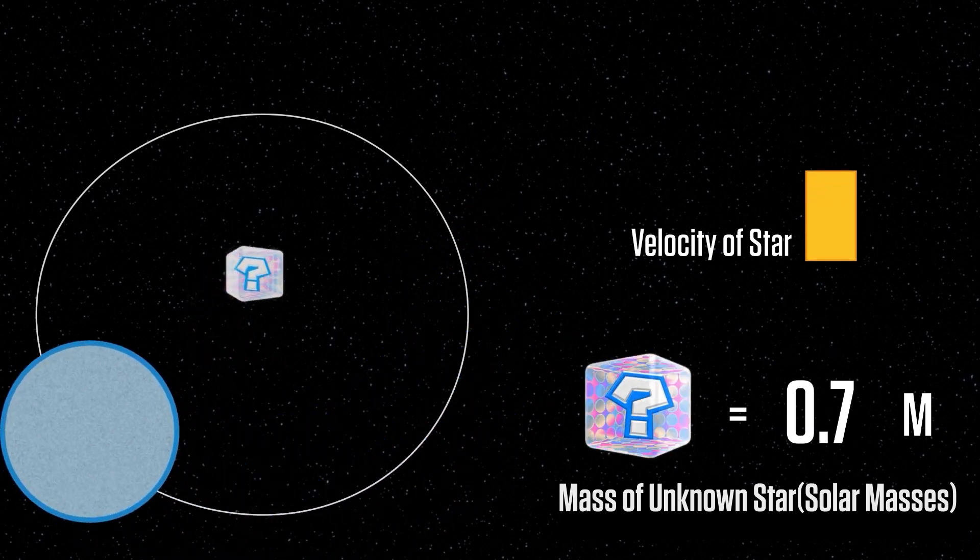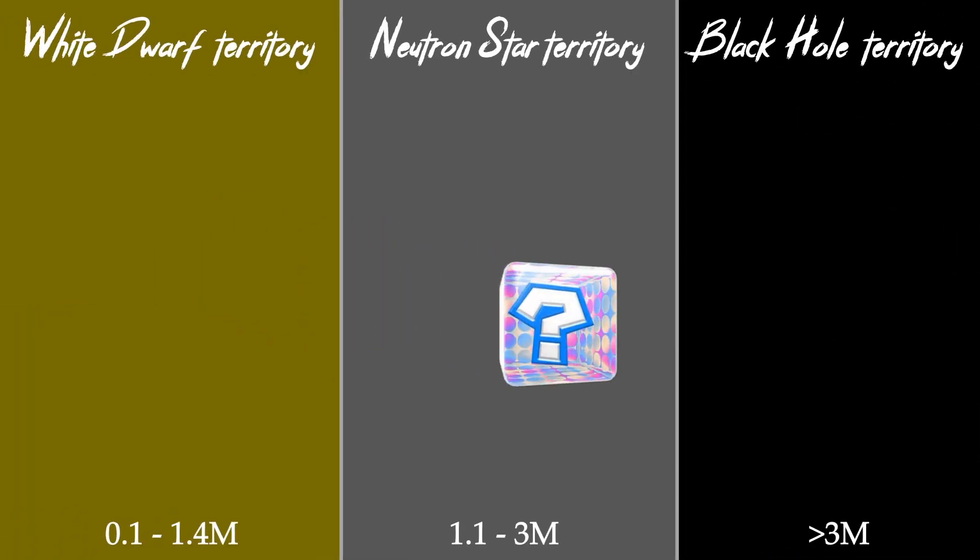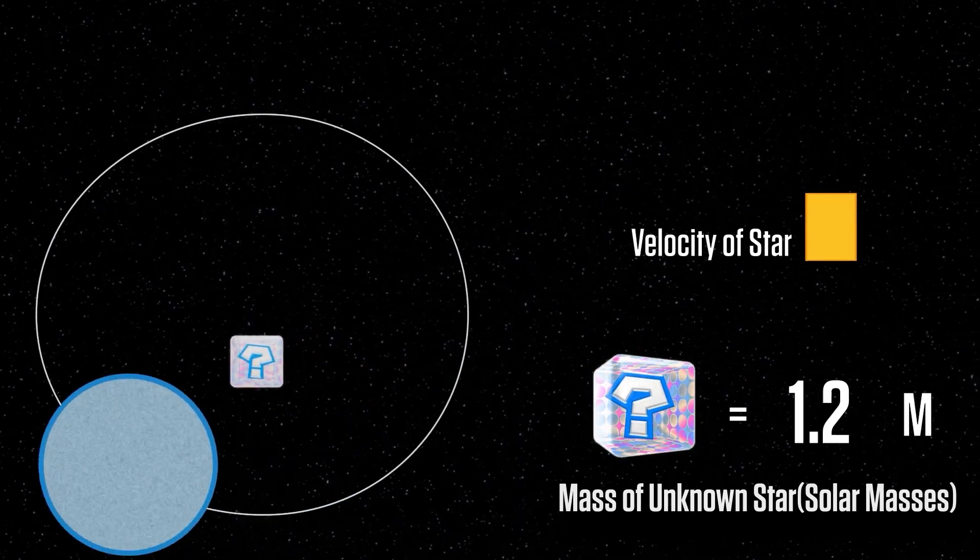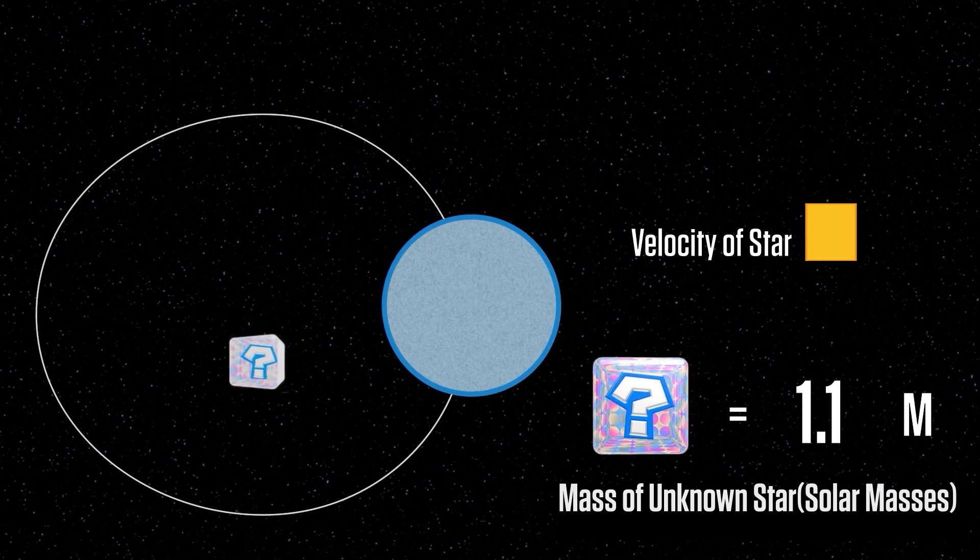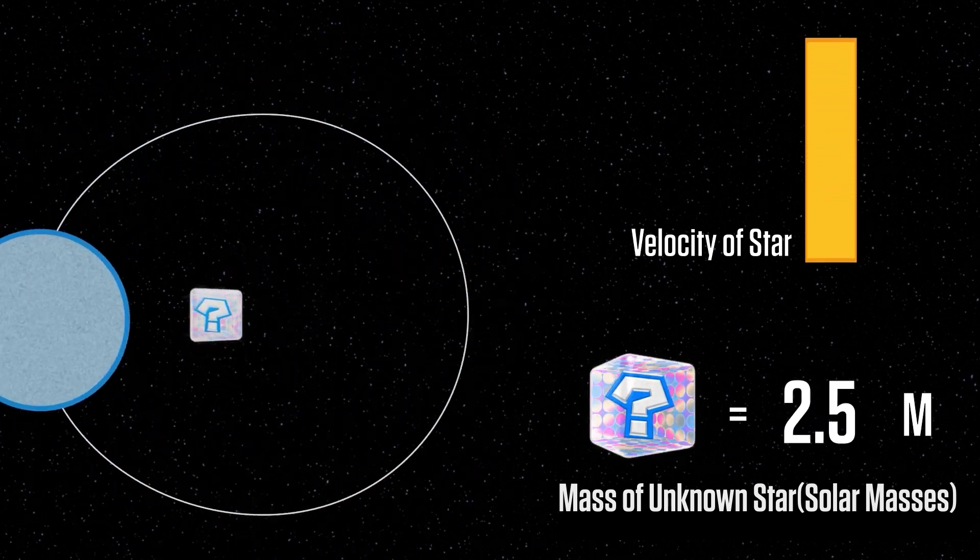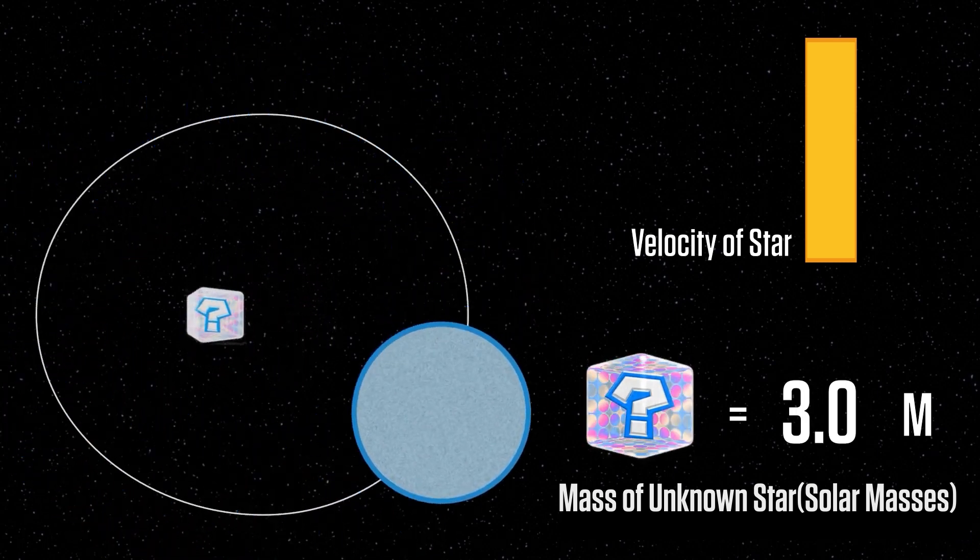And based on the velocity of the star that we observe, Zeldovich proposed that we can measure the mass of the unknown object, and if the mass was great enough, in particular if the mass was more than two solar masses, with one solar mass being equal to our sun's mass, then we know that the star's companion is indeed a black hole. So just to recap, the larger the mass of the mystery object, the faster the velocity of the orbiting star because of the increased pull towards the center.